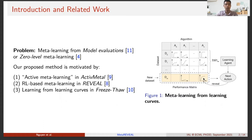Reveal instead learns a policy and performs faster at test time. However, both ActiveMeta and Reveal require final performance scores of fully trained models and they do not leverage learning curve information. Freethought, a method which inspires us to use learning curve information, relies on a heuristic policy and it is not trainable for meta-learning.